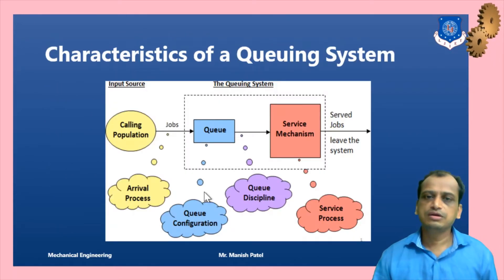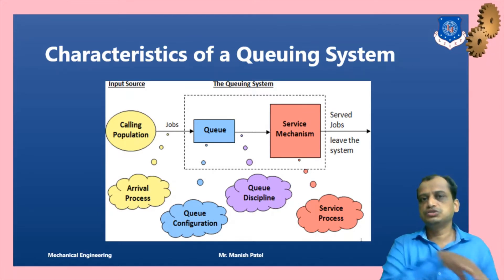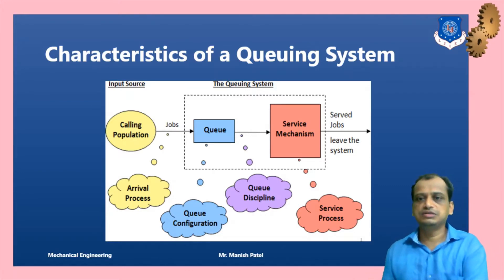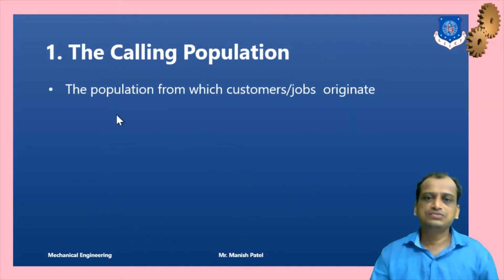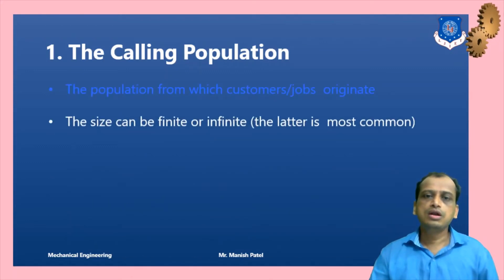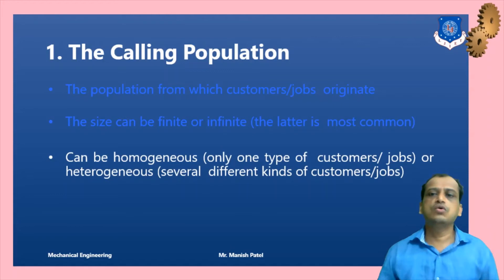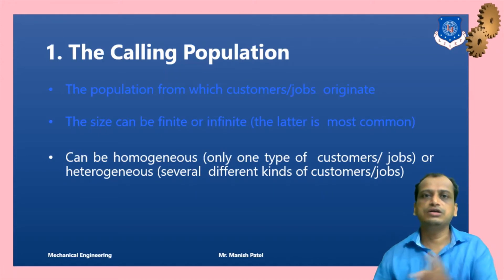Next, we will look into the characteristics of the queuing system. The characteristics start with the calling populations towards the queuing system, then the arrival process, the queue, queuing discipline, service discipline, and departure. The size of the calling population can be finite or infinite, and customers can be homogeneous — one type — or heterogeneous, meaning different types of customers arriving into the system.